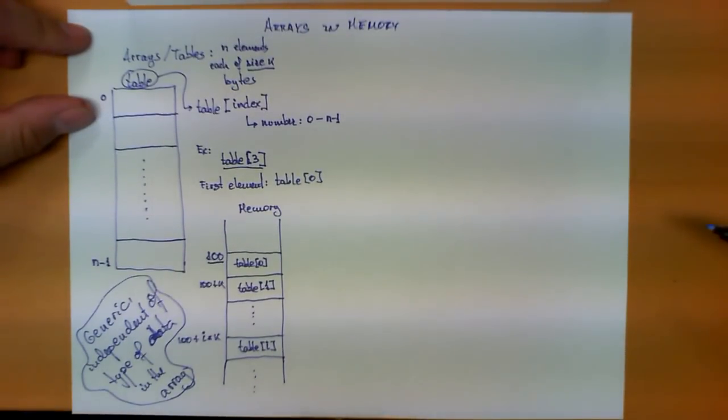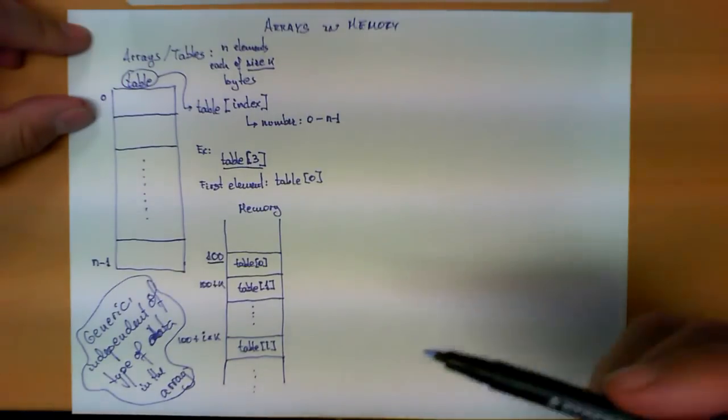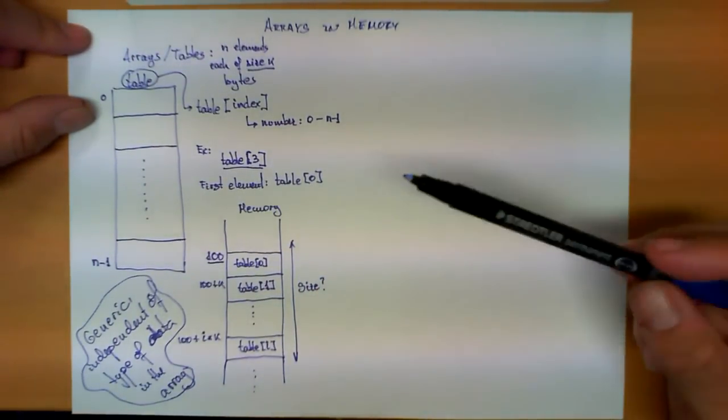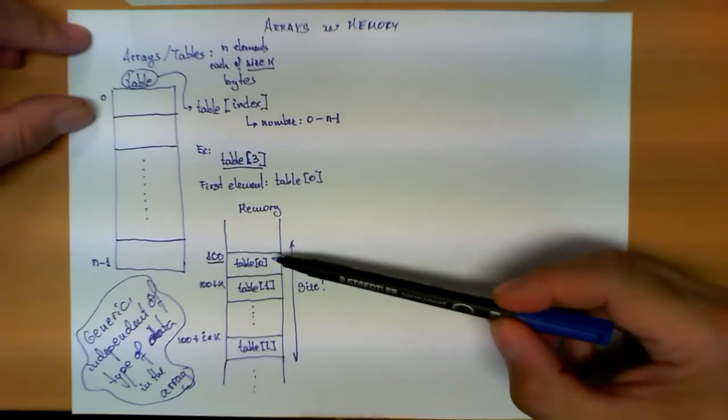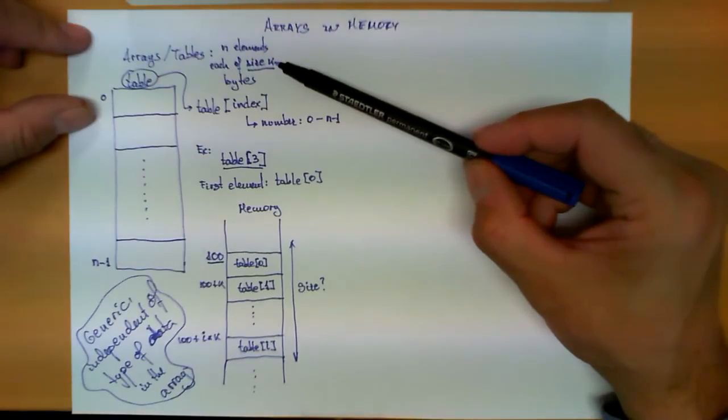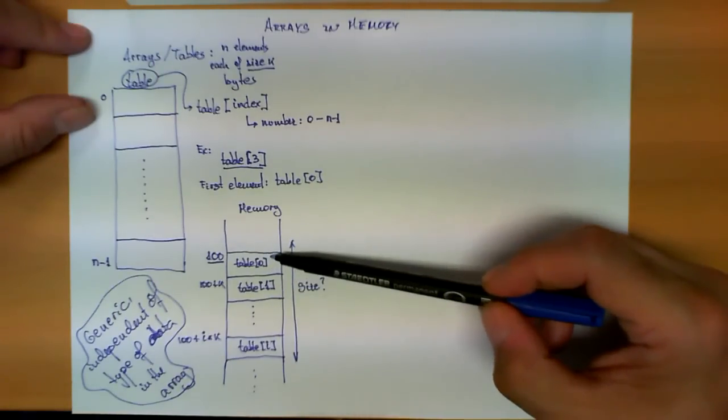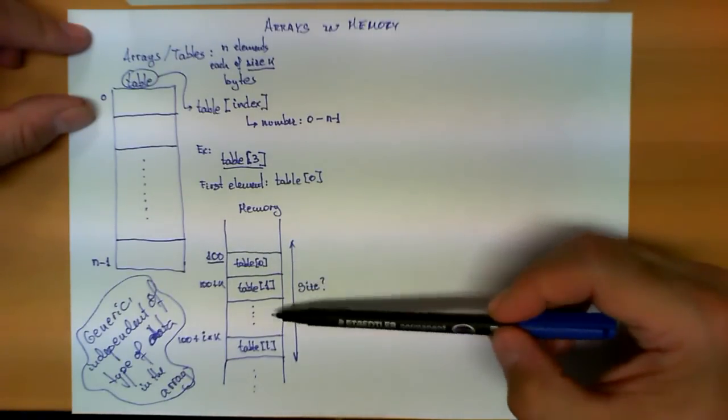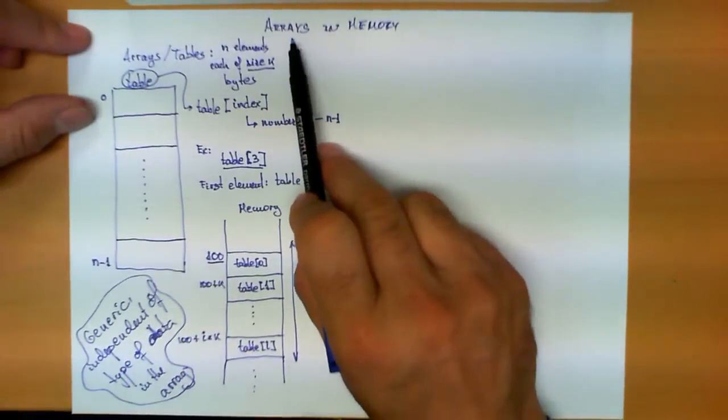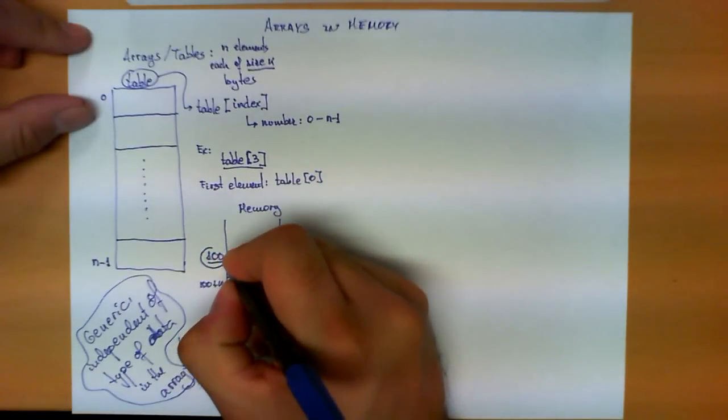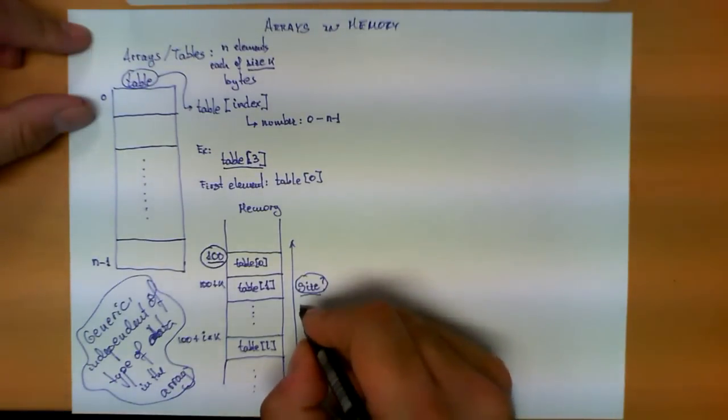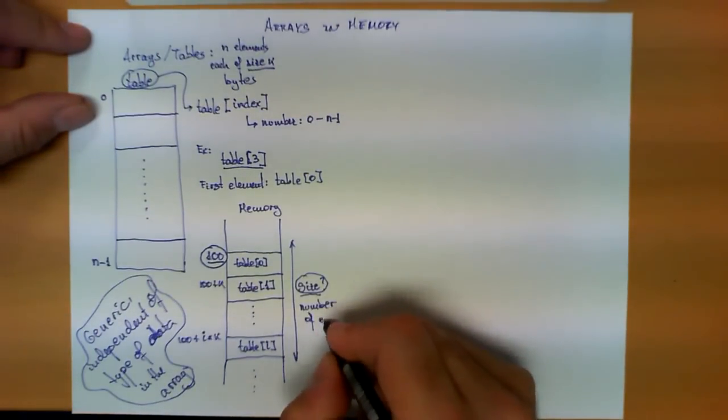Now, when we manipulate this type of data structure, there is an issue that we have to be aware of, which is: how do we know the size of this array? In other words, suppose that you are told that there is an array that starts at position 100, and suppose you have to traverse the array. Suppose that you are given the impression that all the elements have size k, so you know that in order to traverse the elements, you have to jump from k to k bytes. However, how do you know when to stop if you are traversing this table? In other words, how do you know the size?